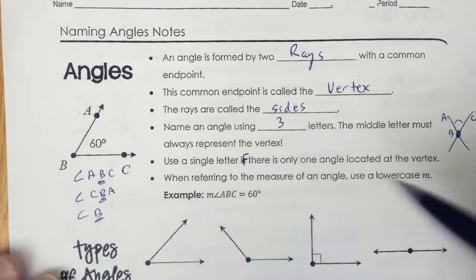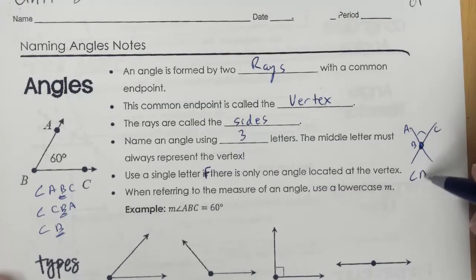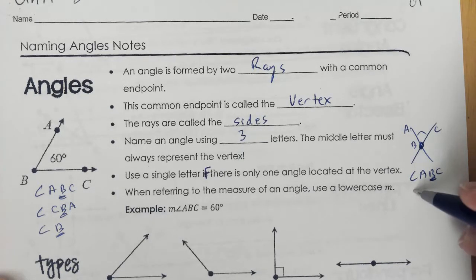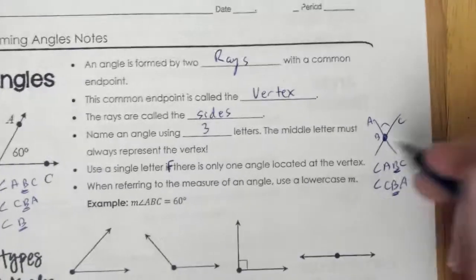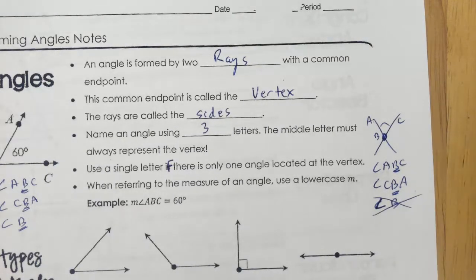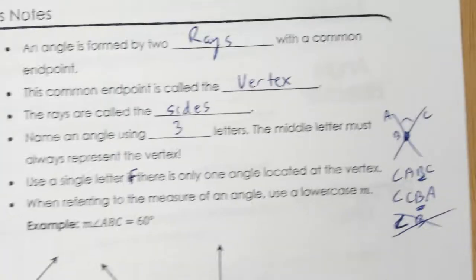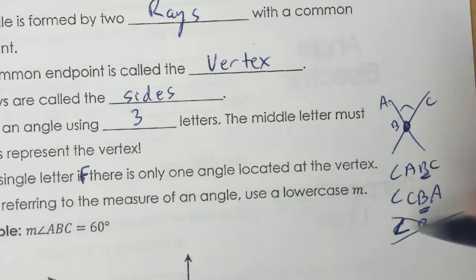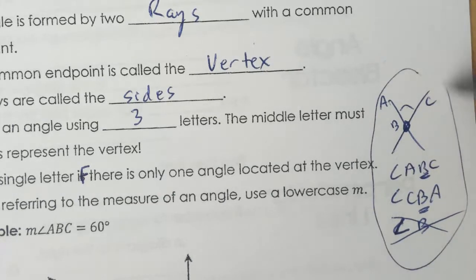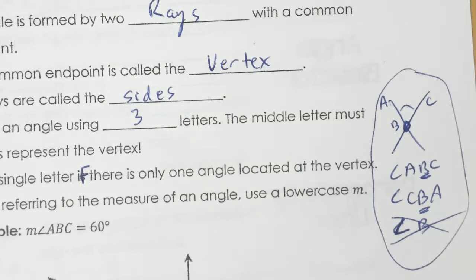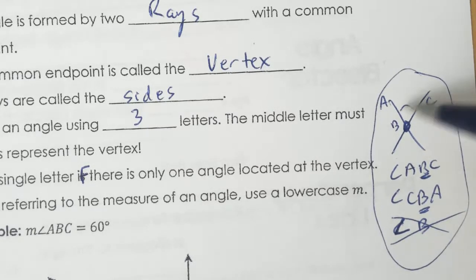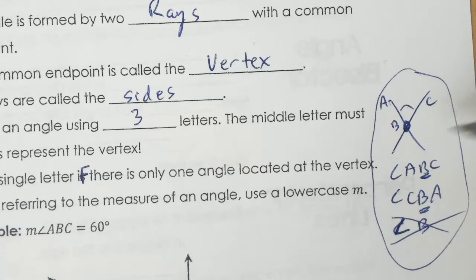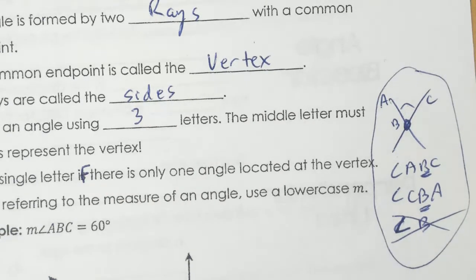All three of those are okay. But over here, we can call this ABC or CBA where B is in the middle, but we cannot call this angle B — because when I say angle B, you don't know if I'm talking about this top angle, the right angle, the left angle, or the bottom angle. So we cannot call it angle B on this particular thing. Use a single letter only if there is one angle at the vertex.